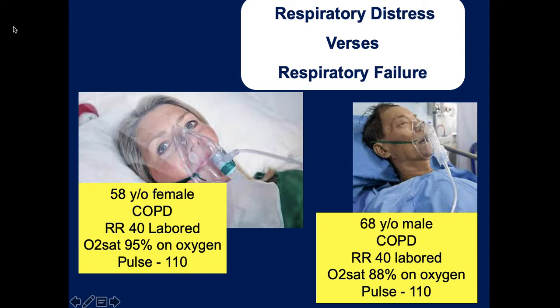Let's say you arrive on scene to the patient on the left, the female. She has a history of emphysema and a respiratory infection. She presents with a breathing rate of 40 times a minute, labored, with oxygen saturations of 88% on room air and a pulse of 110. You apply high-flow oxygen at 15 liters per minute via non-rebreather mask, and her saturations rise to 95%. That tells you the mechanism for gas exchange at the alveolar level is still functioning — she's still able to compensate.